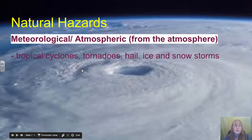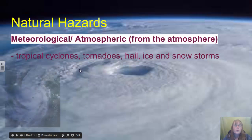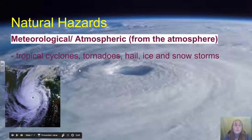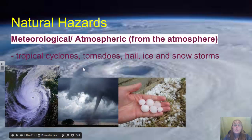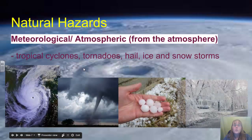Other natural hazards are meteorological or atmospheric disasters. These include tropical cyclones, tornadoes, hail, ice storms, and snowstorms. We'll be examining these during unit two.